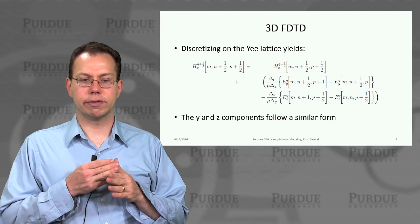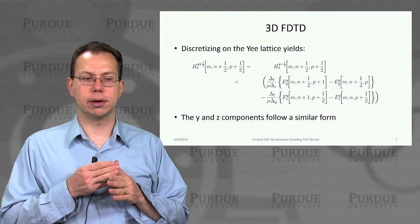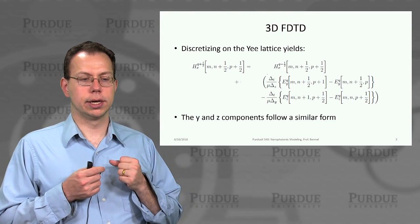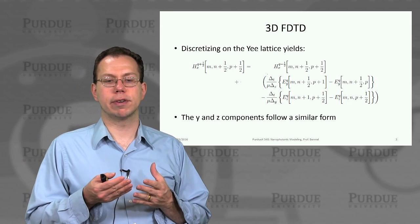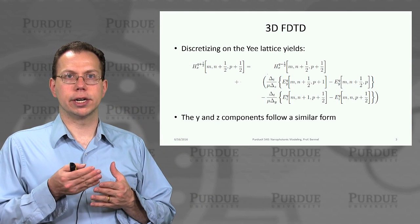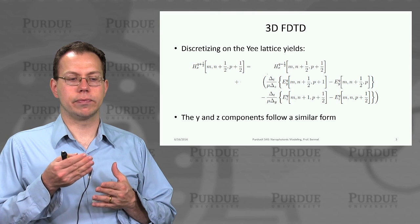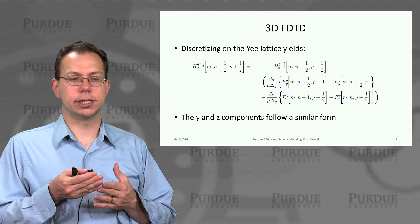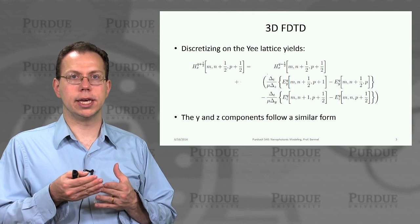So basically, the difference of the Y components and the Z components for the H_X field. And the Y and Z components follow a similar form, where the Y component depends on the difference in E_X and E_Z, and then the Z component of H depends on difference of E_X and E_Y.